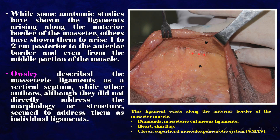While some anatomic studies have shown the ligaments arising along the anterior border of the masseter, others have shown them to arise 1–2 cm posterior to the anterior border and even from the middle portion of the muscle. Owsley described the masseteric ligaments as a vertical septum, while other authors, though they did not directly address the morphology or structure, seem to address them as individual ligaments. This ligament exists along the anterior border of the masseter muscle.